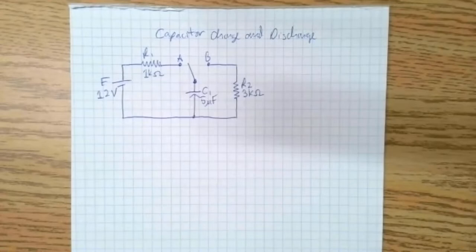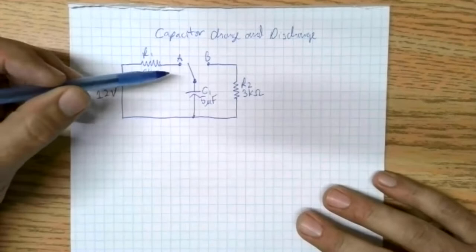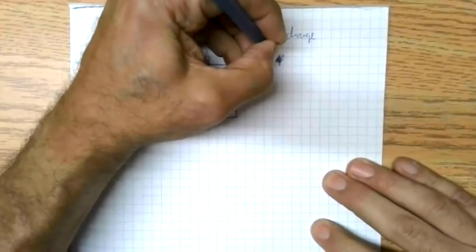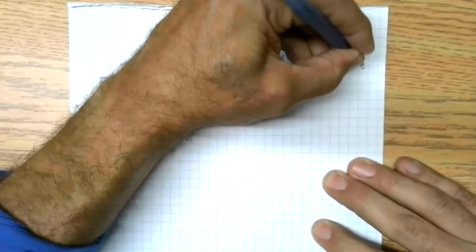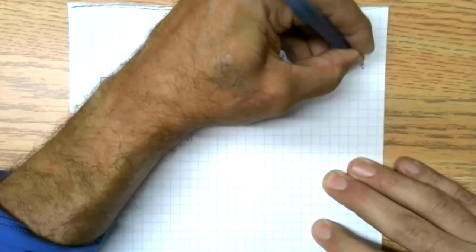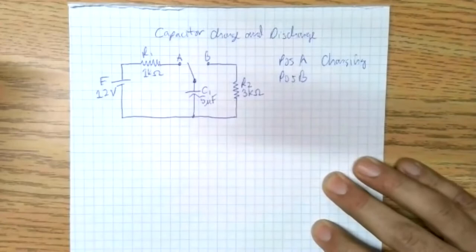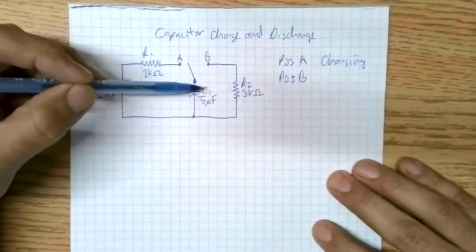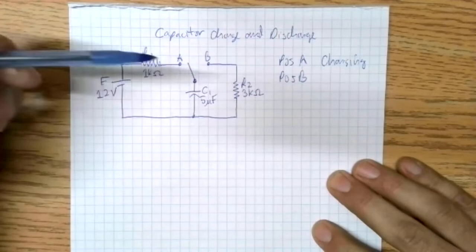We're going to go over simple calculations and a demo in Multisim with respect to capacitors charging and discharging. So in this circuit, we have a single pole double throw switch. When we are in position A, we have our capacitor being charged by E — it's charging. In position B, the capacitor has no voltage applied to it, so it will discharge. Whatever voltage is stored in that capacitor will discharge into R2.